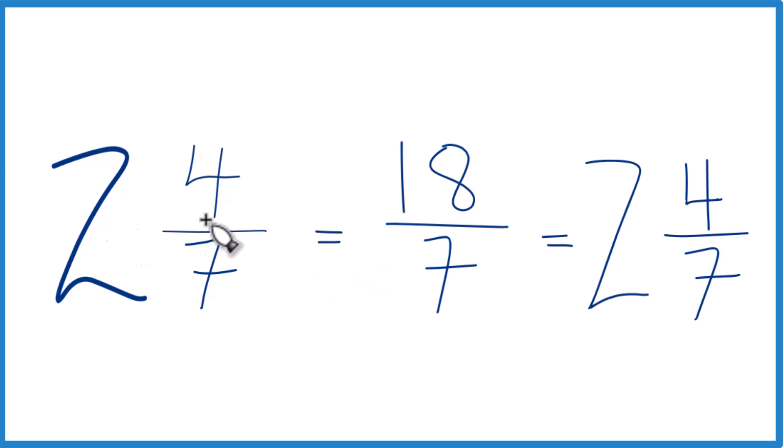It's Dr. B converting the mixed number 2 and 4 sevenths to an improper fraction. The answer is 18 sevenths. Thanks for watching.